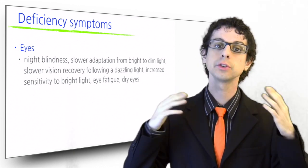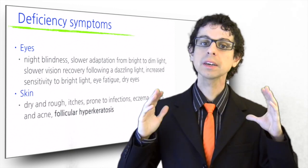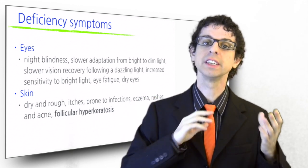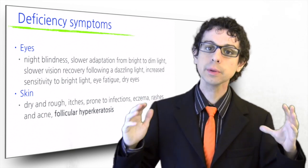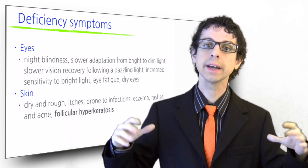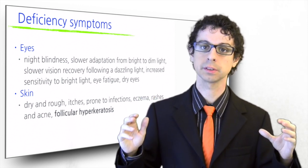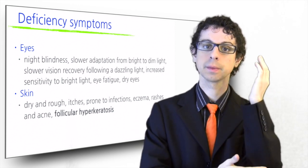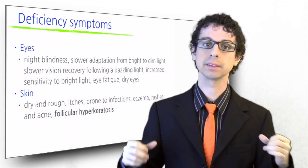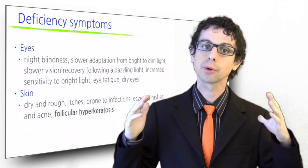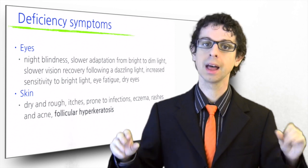Let's move on to our skin. Our skin becomes dry and rough. It often itches and is prone to infection, eczema, rashes, and acne. The accumulation of dead cells in our pores can create particularly rough areas. This is called follicular hyperkeratosis, and it's usually first observed at the elbows. Your hair can also become dry and lose its shine. Mouth and upper airways have a tendency to become dry as well, as vitamin A is necessary for mucus secretion in all mucous membranes.